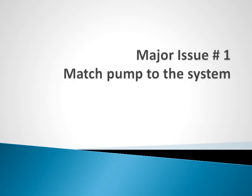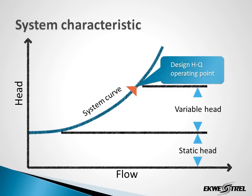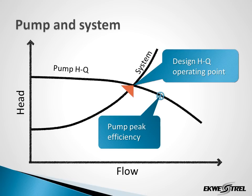We're going to take a closer look at major issue number one: matching the pump to the system. The conditions of service necessarily begin with an estimate of the system head versus flow, or system curve. System curves will always have a variable head component, and many — but not all — will have a static head component as well. A pump will only operate on the system characteristic curve. Here we have the pump curve and here's the system curve, and this is where the pump will operate. In this particular case, the pump peak efficiency is to the right at a higher flow relative to where the pump is operating, so this pump is slightly oversized.